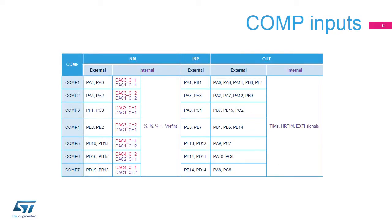Each comparator has a non-inverting input and an inverting input. The INM cell field in the COMP1_CSR and COMP2_CSR registers is used to select the inverting input. Note that the output of any comparator can be connected to timers and EXDI units.